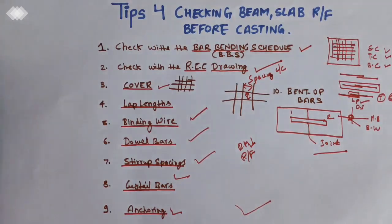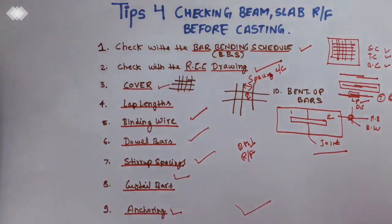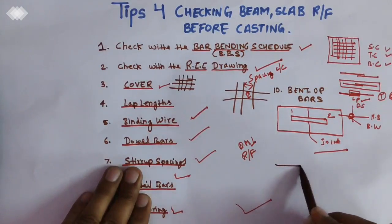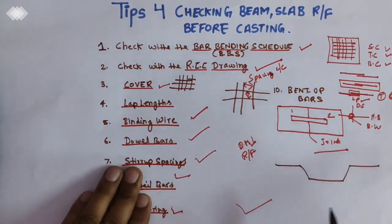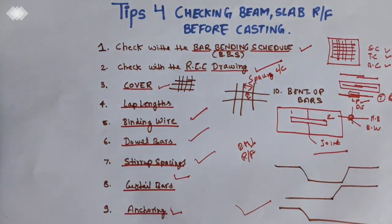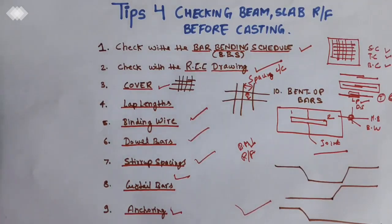The ninth tip is bent-up bars. To make the beam away from compression zones, we provide bent-up bars — alternate bars bent up like this, going here and there. So these are the basic tips for checking beam and slab reinforcement before casting. I hope you got the video — do like, subscribe, and share with your friends. Thank you very much.